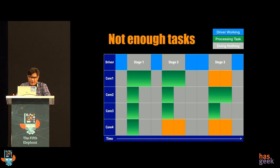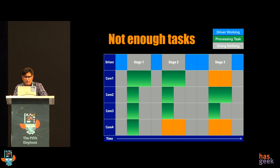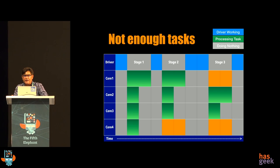The second reason for wasted compute is not having enough tasks. If you look at stage two and core four — it doesn't have any work. If you have four cores available but only give three tasks, one core gets no work. Similarly in stage three, cores one and four have no tasks. If you don't have tasks, there is no way that compute can be used. Be very, very sensitive to the fact that there are enough tasks available for Spark to really execute — otherwise, that compute is not going to work for you.